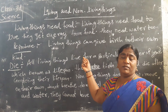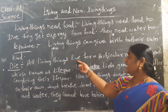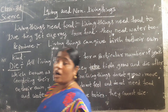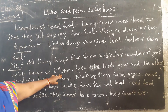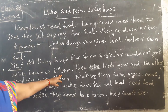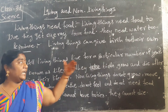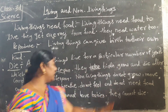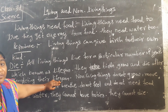Living things can die. All living things live for a particular number of years, which is known as life span. That is called life span. They take birth, grow, and die after completing their life span.